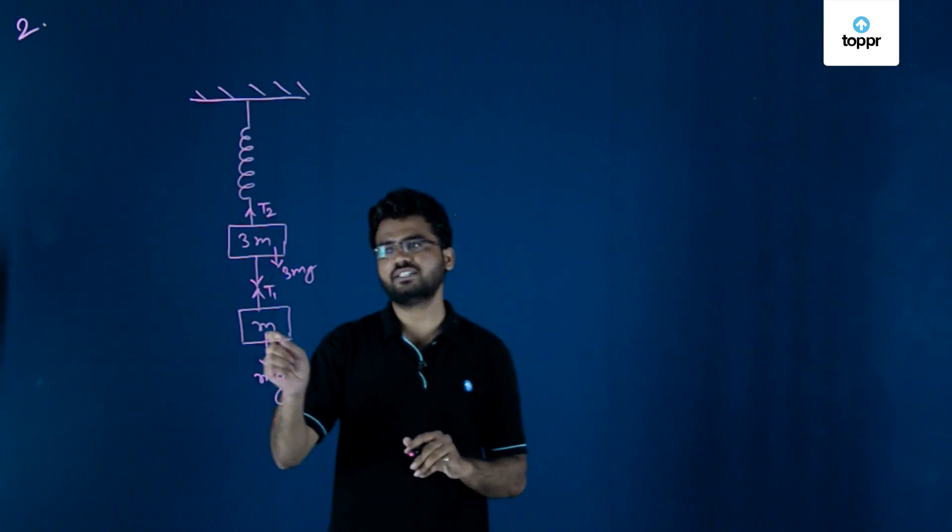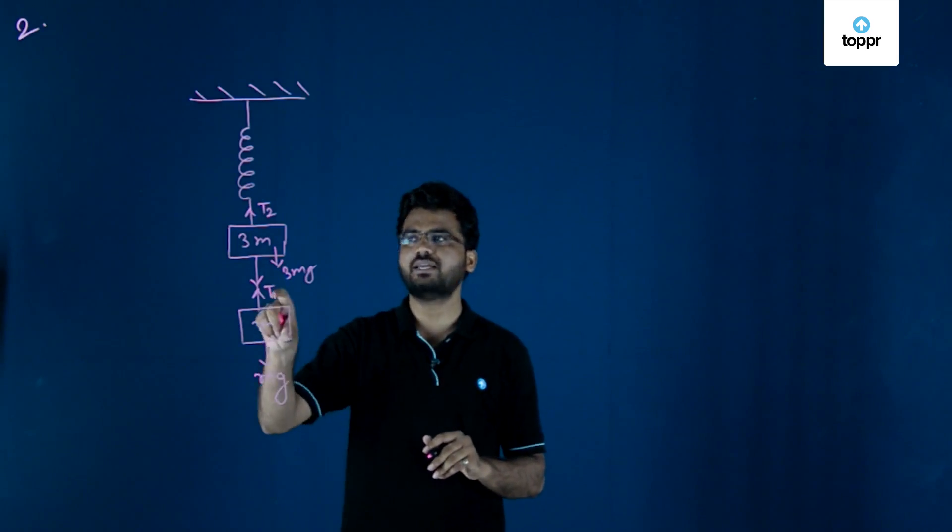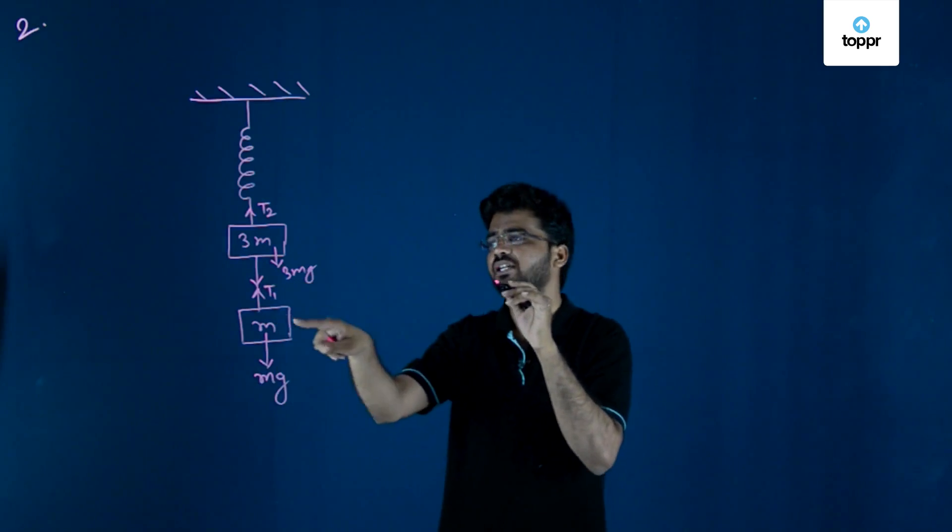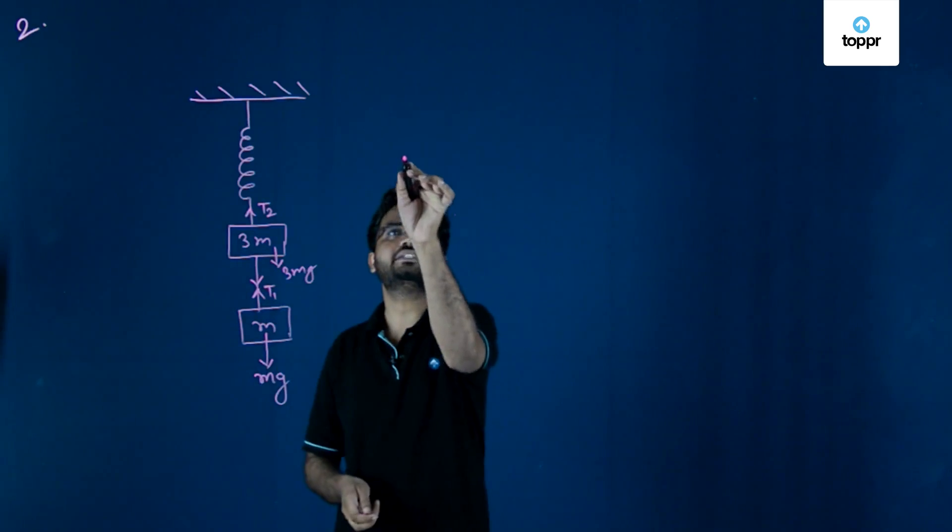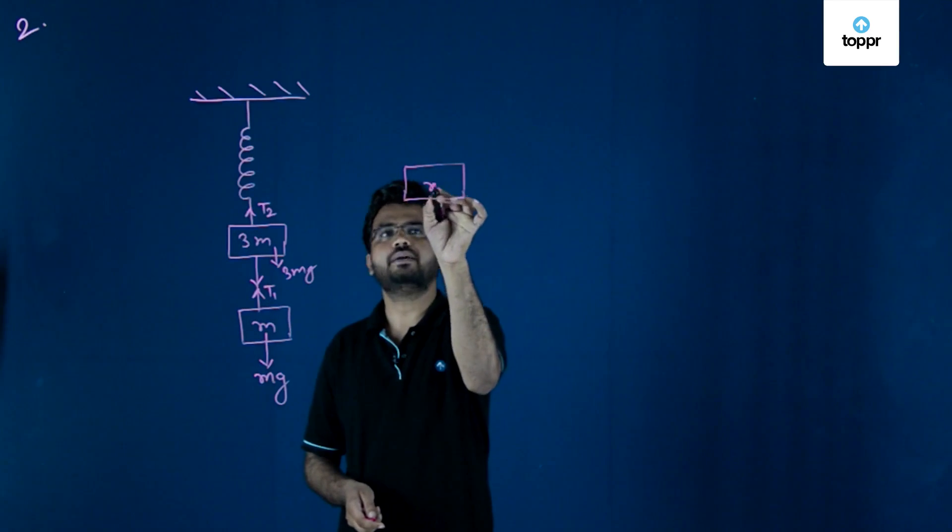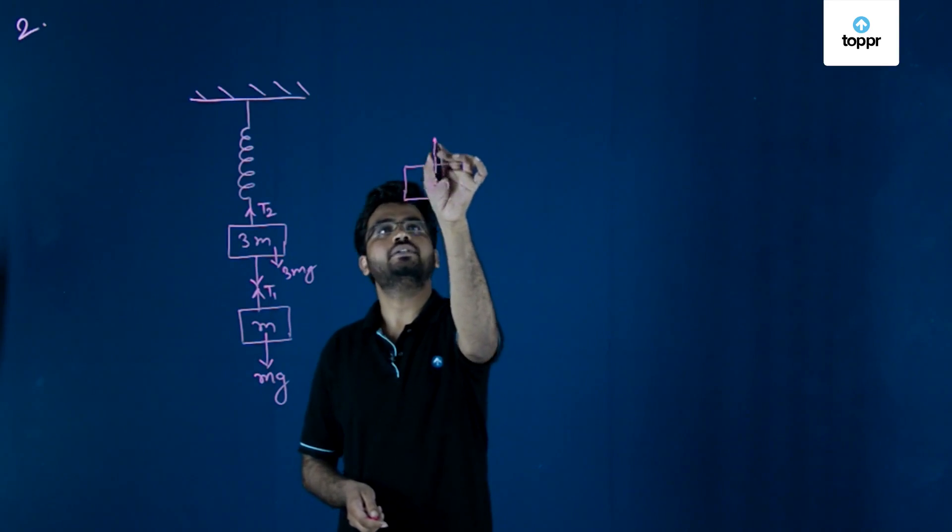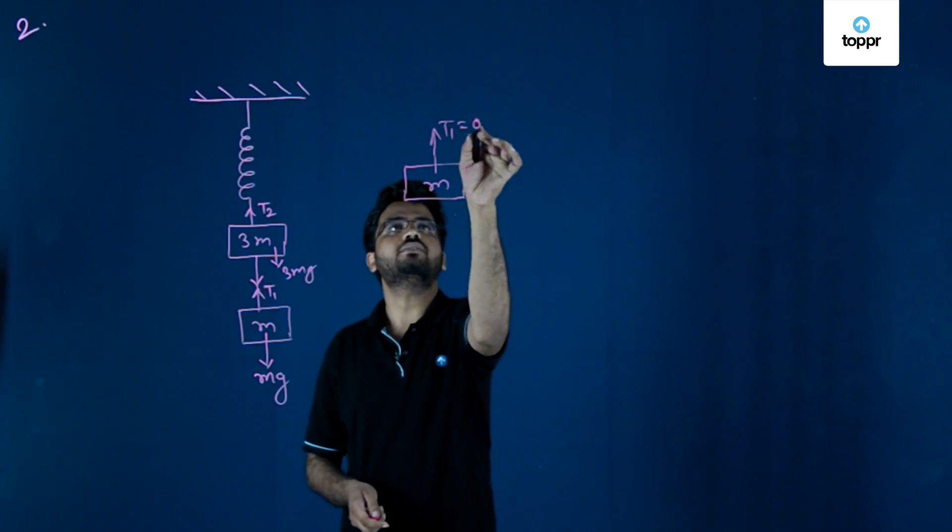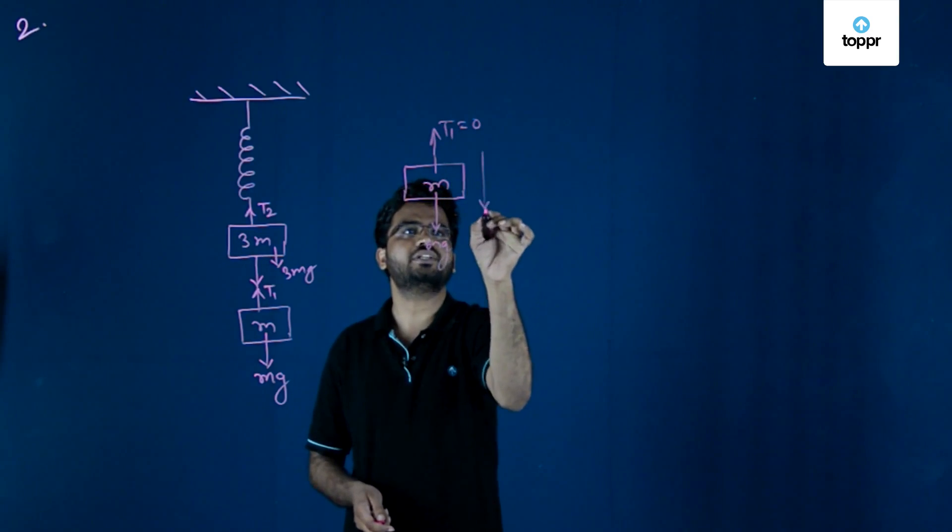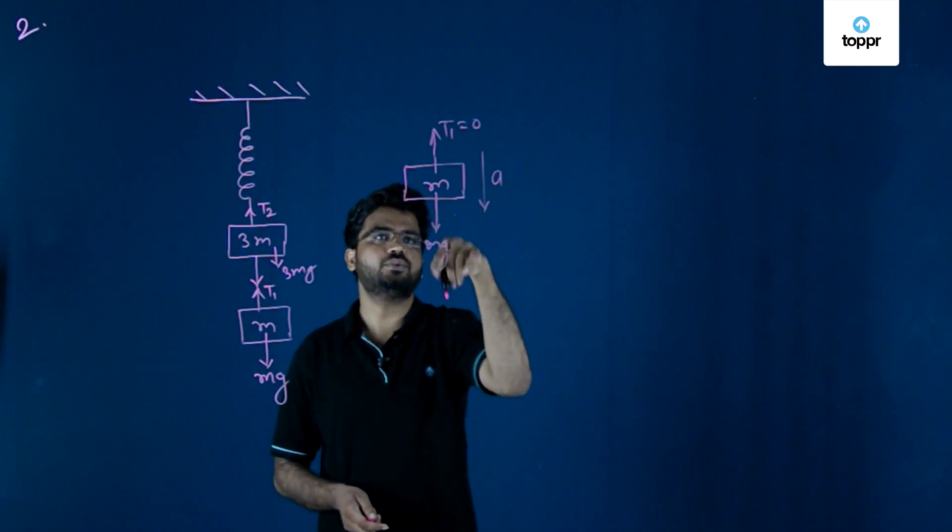To find this, you have to firstly find out the free body diagram of m and 3m. When we cut this string, the tension becomes 0. The free body diagram for m has upward T1 equal to 0, downward mg, and acceleration is downward.